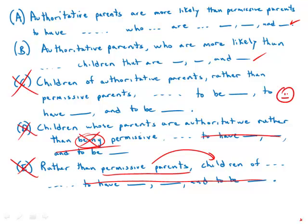So we're left with A and B. Now B would be perfectly correct, except B does not have a verb at all. It has the subject — authoritative parents — then a whole string of modifiers: 'who are more likely than permissive parents to have children who are blah blah blah.' We get to the end of the sentence still waiting for authoritative parents to have a verb. B is just missing a verb — the whole sentence is a fragment and is not a complete sentence.